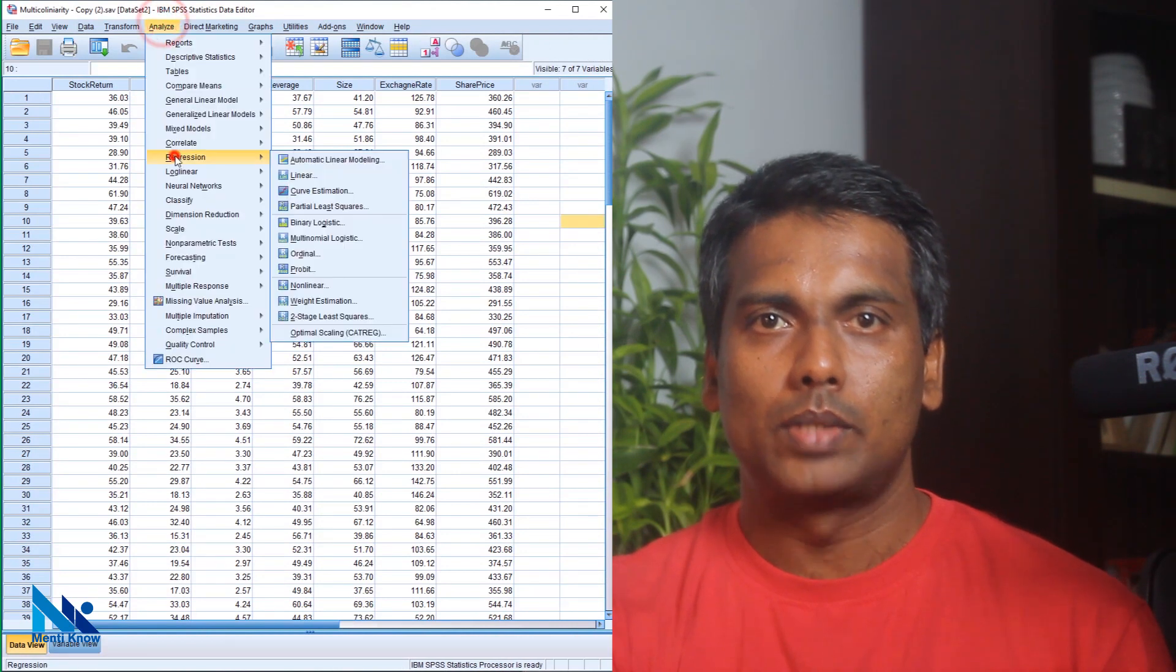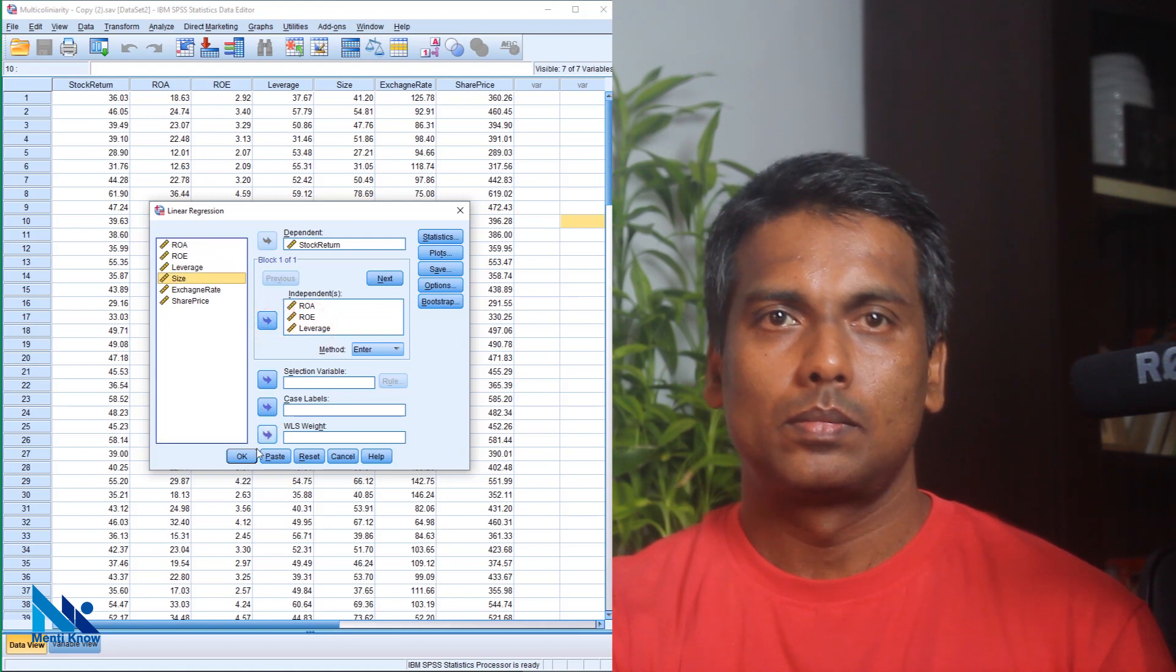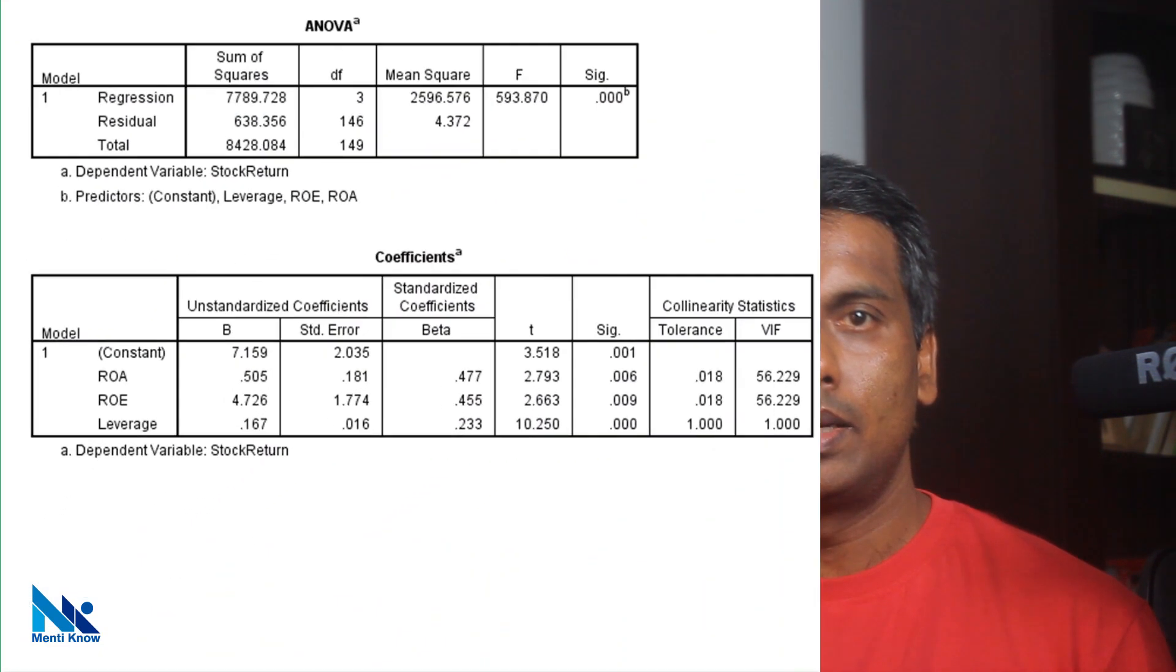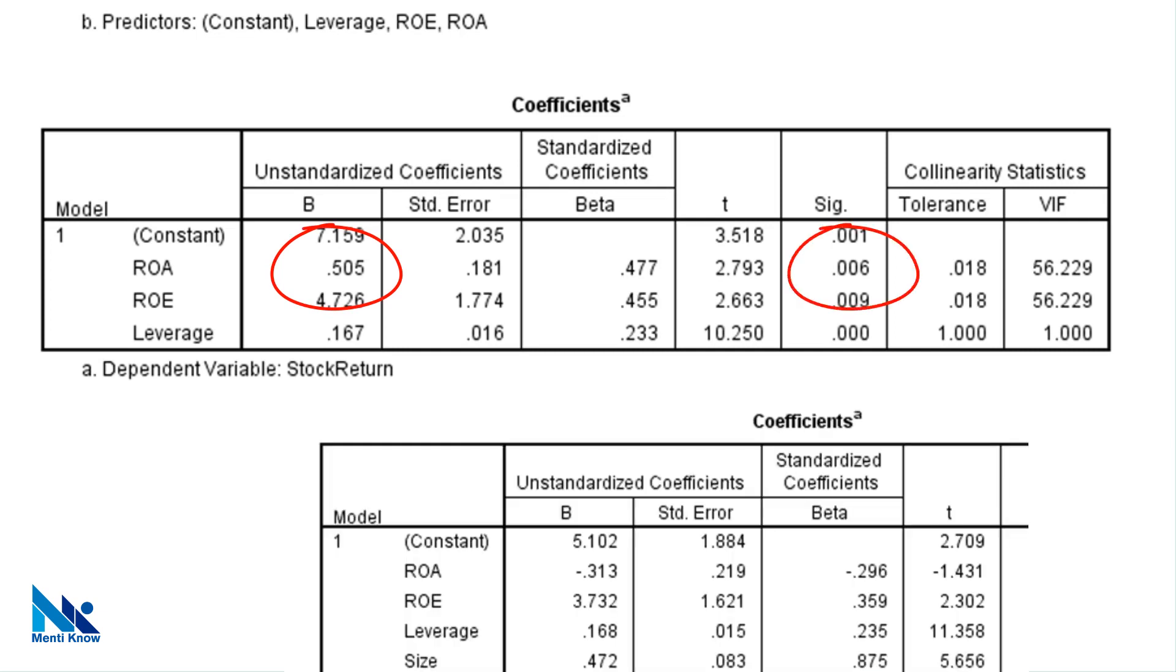So first I remove size from the model. Now we can see that coefficient for ROA has a positive sign and statistical significance. Look, small alteration to the model has substantially altered the coefficient for ROA.